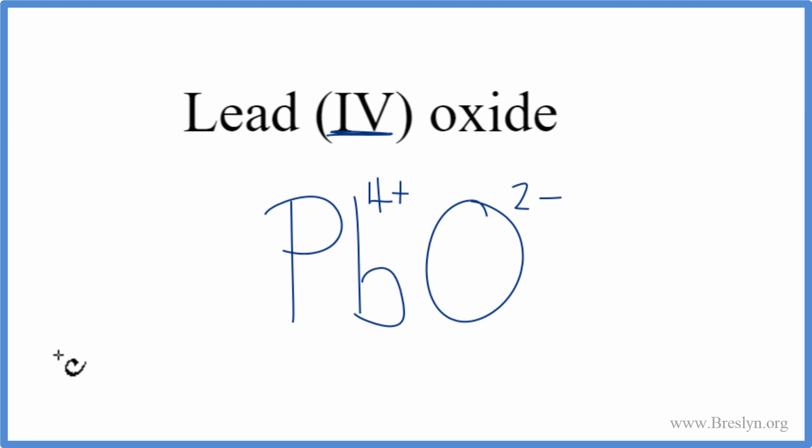We can do that by changing the subscripts. So we could put a 2 as our subscript here on the oxygen. 2 times 2-, that's 4-. And then have the 1 times the 4+, that's 4+. These two numbers add up to 0, net charge of 0. This is the correct formula for lead (IV) oxide, PbO2.